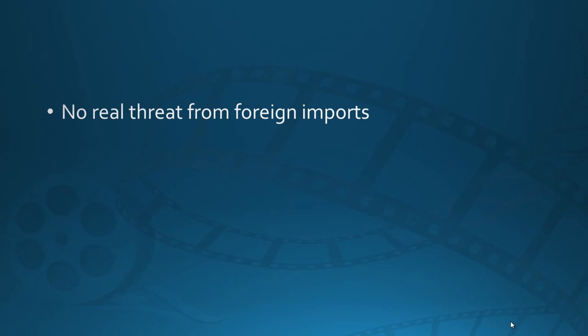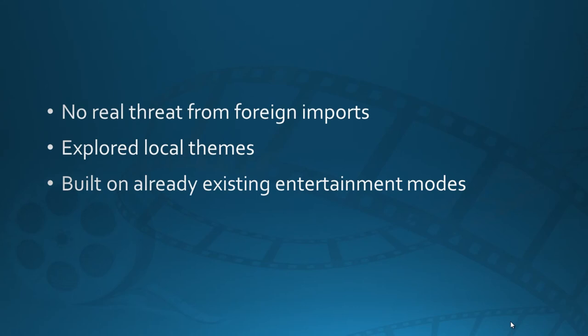While Indian filmmaking was really starting to gain ground, the threat from foreign imports was actually not huge because Indian audiences were really glued to local themes — the domestic themes and stories that the Indian people could relate with. The domestic cinema was thriving and becoming more popular compared to foreign imports, because it was built on the already existing entertainment modes. Indian cinema was having a really good run and people were really enjoying how Indian cinema was coming to be.